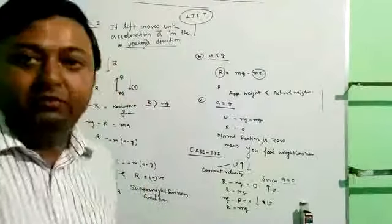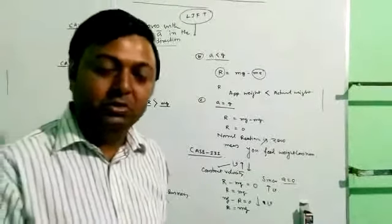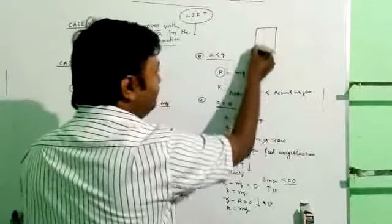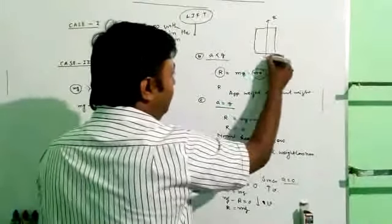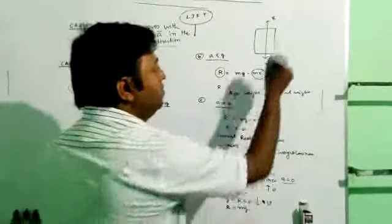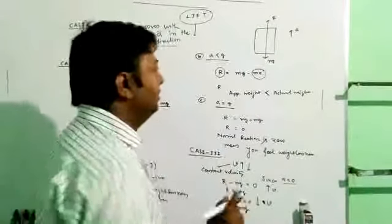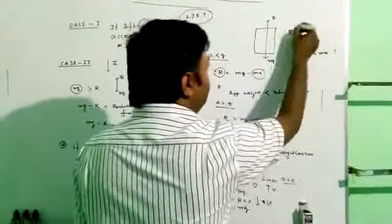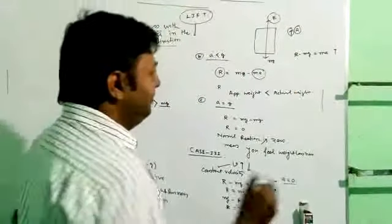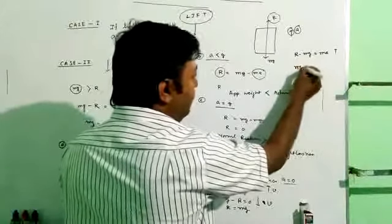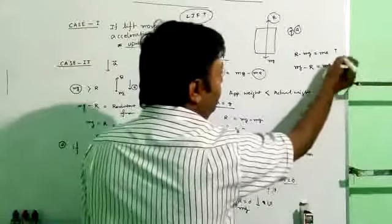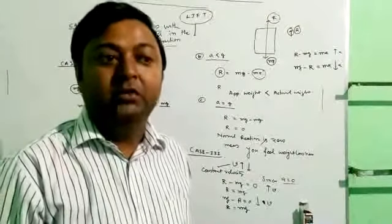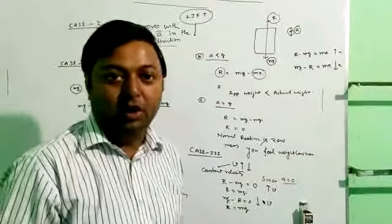This is the lift motion. The basic concept is: R is the upward force and Mg is the downward force. When going upward with acceleration, R minus Mg equals Ma. When going downward with acceleration, Mg minus R equals Ma. If you study lift motion well, then you can solve problems on this basis. The next class will be on pulley problems.